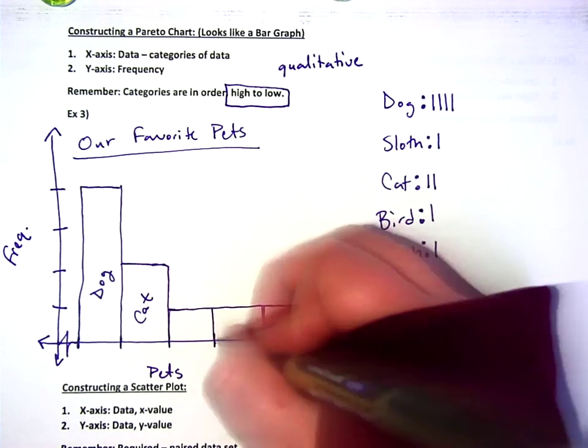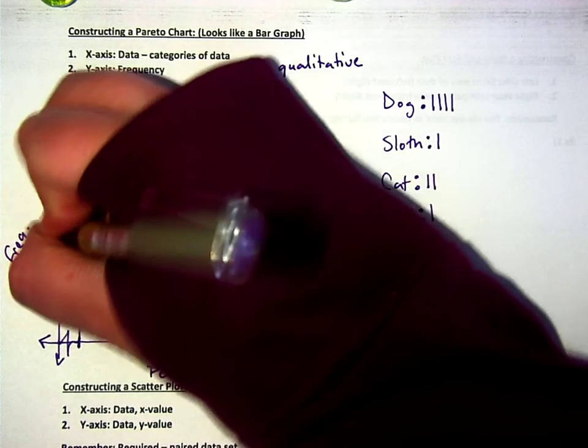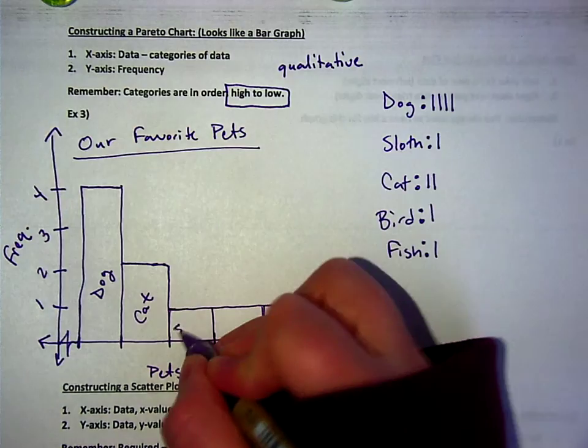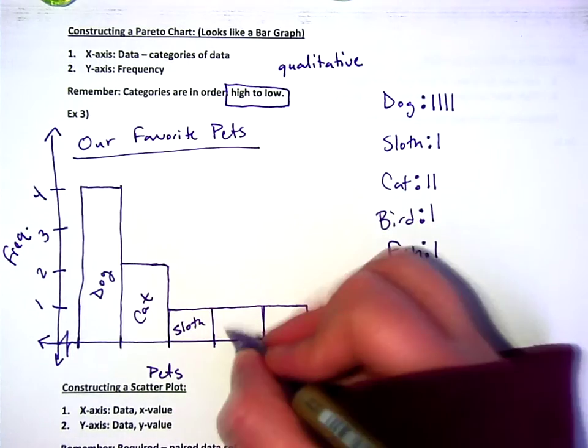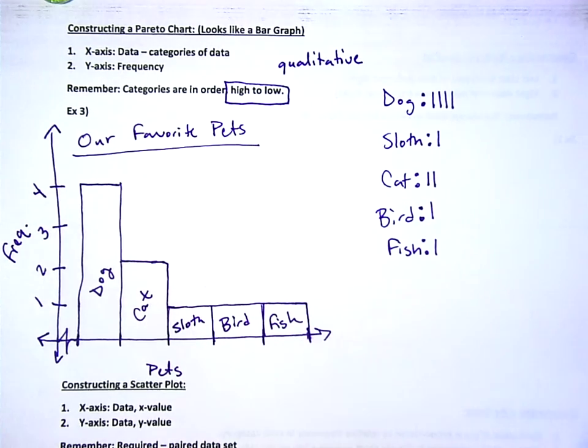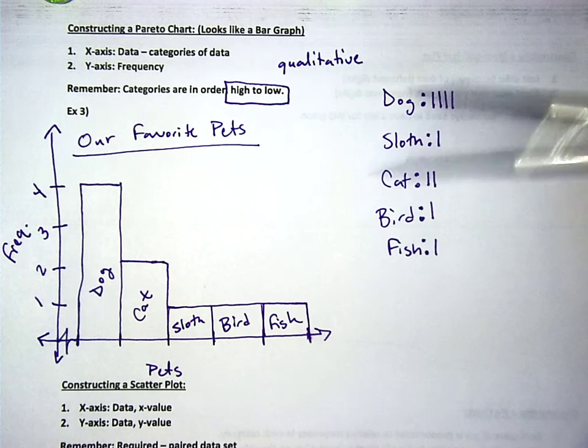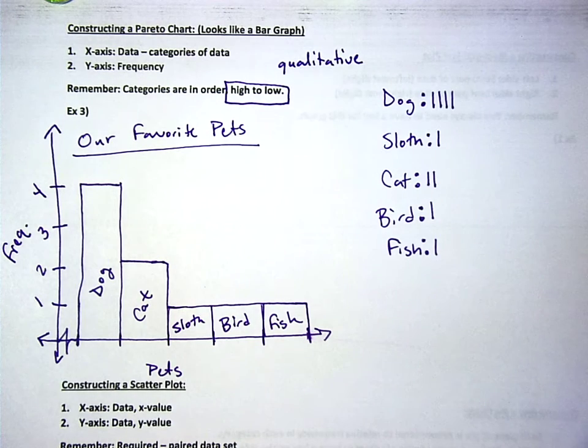And then we got three one categories. And for those, it doesn't matter what order you put them in. You can either write the category right on the graph, or you could do the same thing that you do with a pie chart, where you have, like, a little, like, ooh, dog is green and cat is dots or whatever. Okay.